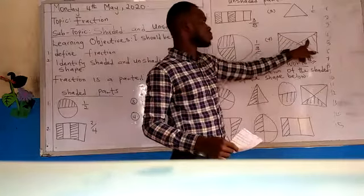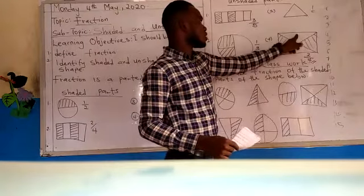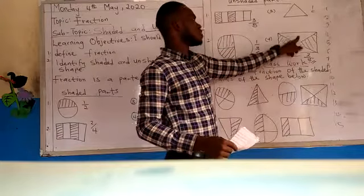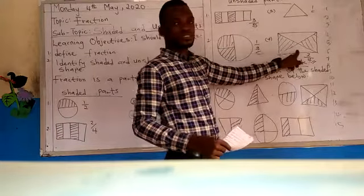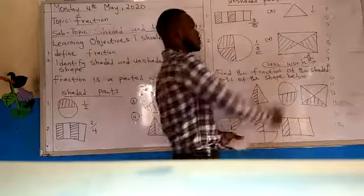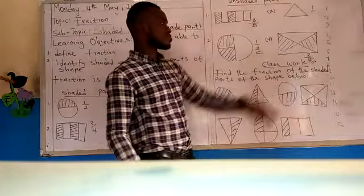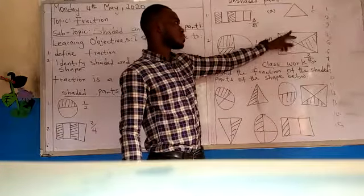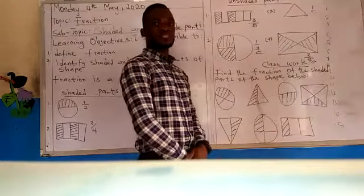One and two, one and two. The top and below, they are unshaded, isn't it? Therefore we have two out of four. That is the fraction of this unshaded part. Here we have two over four. Is that understood?